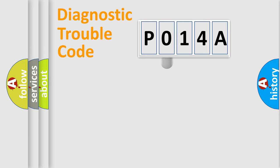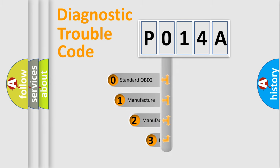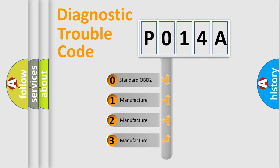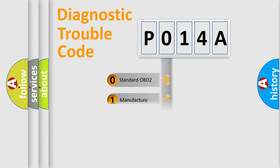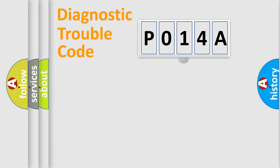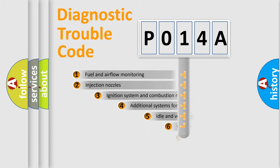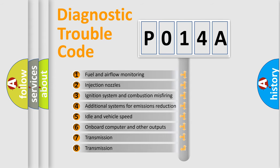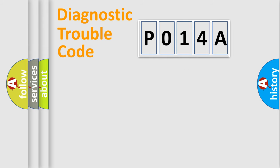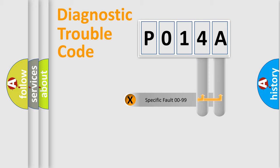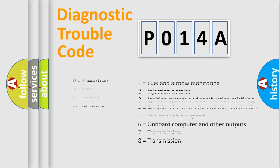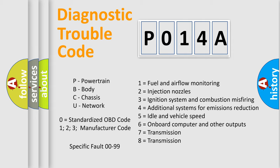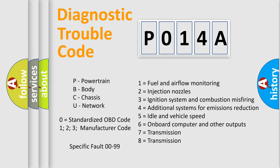This distribution is defined in the first character of the code. If the second character is expressed as zero, it is a standardized error. In the case of numbers 1, 2, or 3, it is a more manufacturer-specific expression of the error. The third character specifies a subset of errors. Only the last two characters define the specific fault of the group, and this division is valid only when the second character is zero.